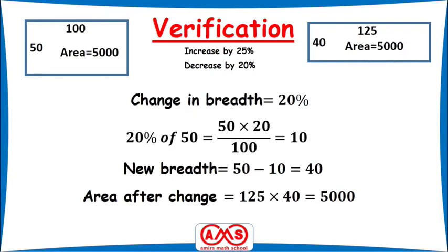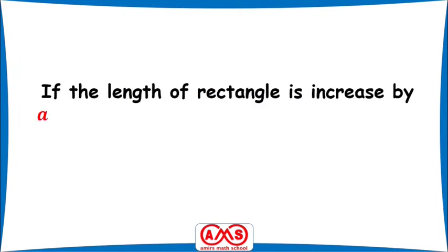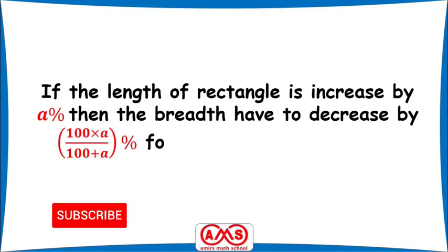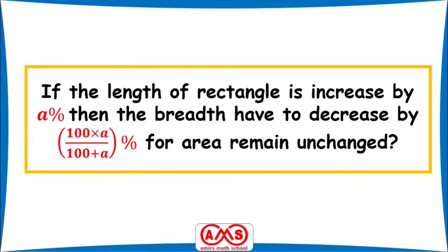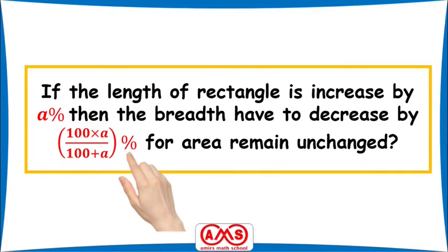This verifies that if we increase the length by 25% and decrease the breadth by 20%, the area of the rectangle remains unchanged. The general formula is: if the length of a rectangle is increased by A percent, then the breadth must decrease by 100A divided by (100 plus A) percent for the area to remain unchanged. This is our working formula.